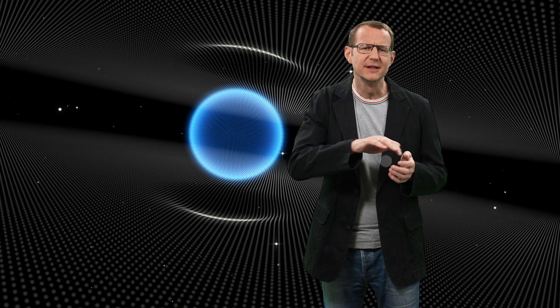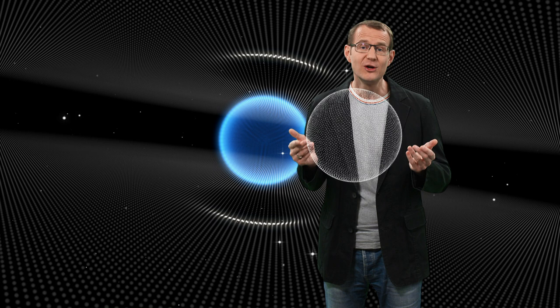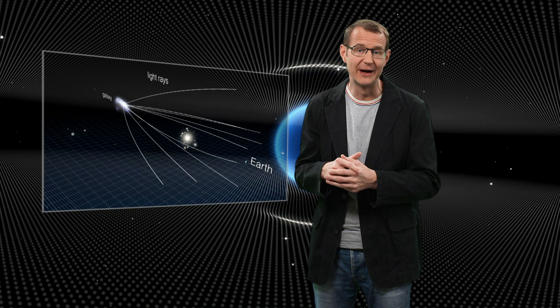In space, light travels invariably along straight lines. But what's a straight line? Well, it's the shortest distance between two points. But in a curved space, the shortest distance between two points may not necessarily look particularly straight to us. And what that means is that when a light ray passes very nearby a massive object that curves the space around it, the light ray is bent.